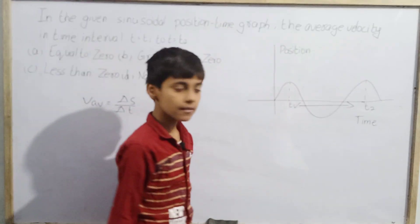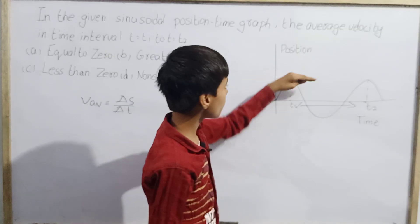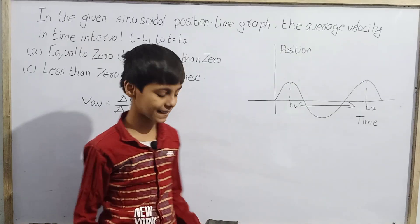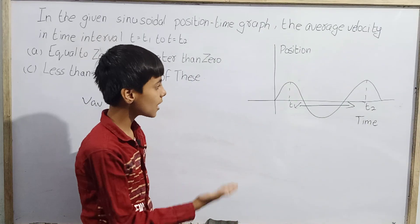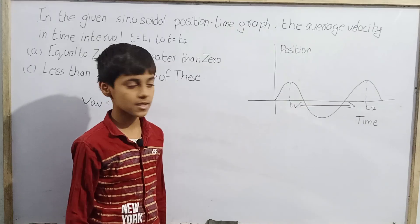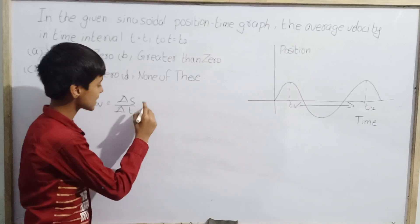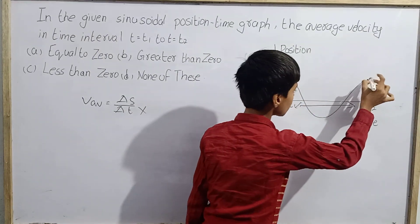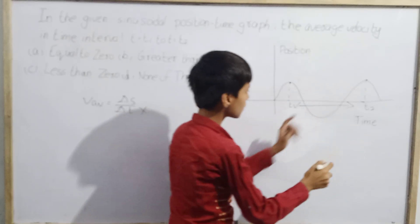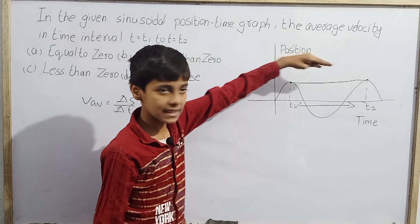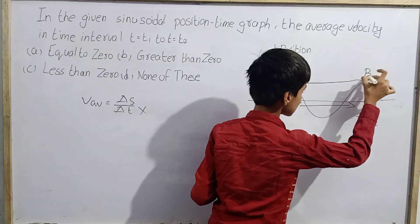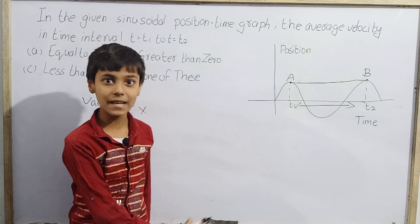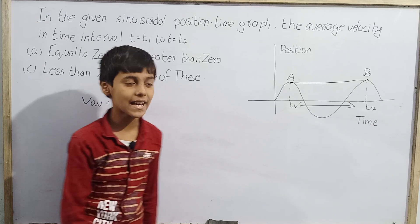We don't have the actual numerical values of position or displacement, so we can't directly apply the formula. Instead, we draw a chord between the two points at t1 and t2 on the graph. The slope of this chord gives the average velocity.